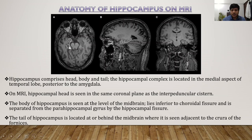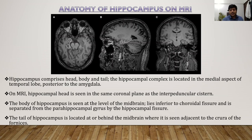The hippocampal complex is located in the medial aspect of the temporal lobe posterior to the amygdala. On MRI, hippocampal head is seen in the same coronal plane as the interpeduncular cistern. The body of the hippocampus is seen at the level of midbrain, lying inferior to the choroidal fissure and separated from the parahippocampal gyrus by the hippocampal fissure. The tail of hippocampus is located at or behind the midbrain where it is seen adjacent to the cura of the fornices.